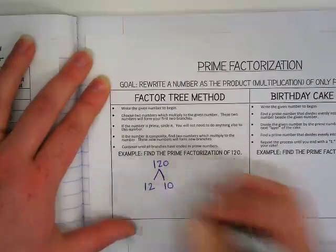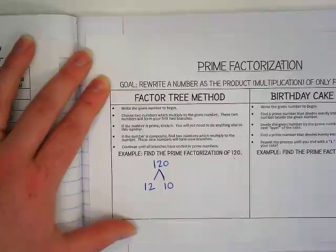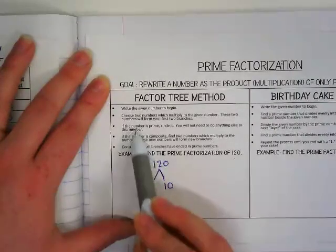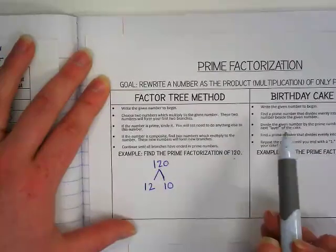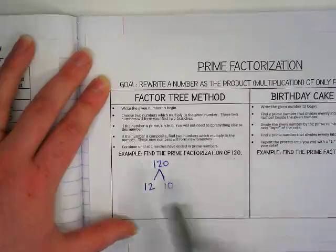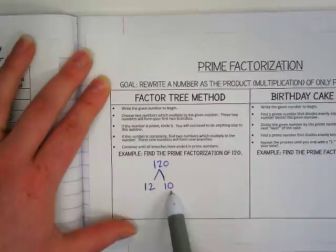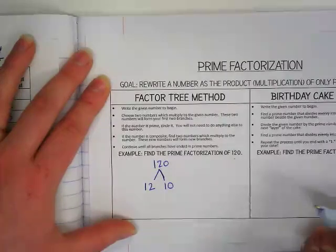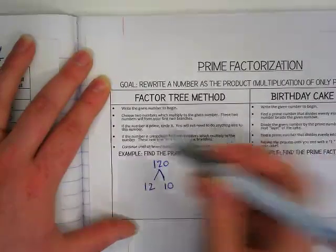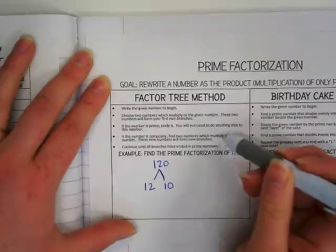If the number is prime, circle it. You will not need to do anything else to this number. Do we have any prime numbers? No, we don't. So as Flocab said, we got to break it down. If the number is composite, find two numbers which multiply to the number.